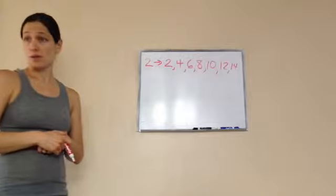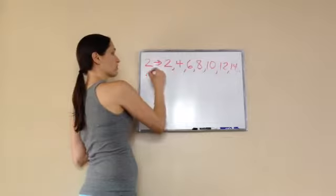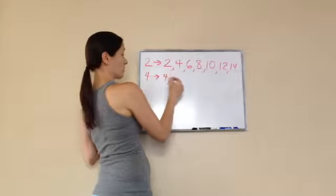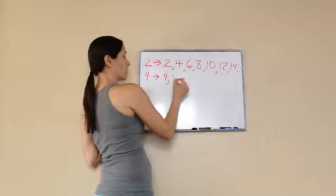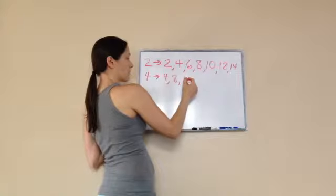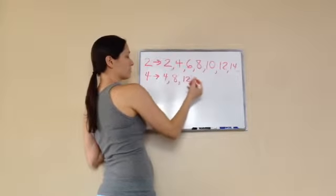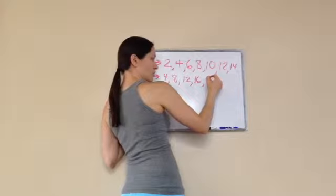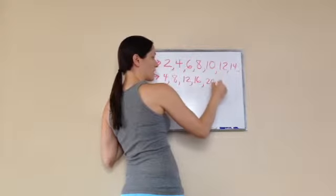If I asked you the multiples of 4, what's 4 times 1? 4. 4 times 2? 8. 4 times 3? 12. 4 times 4? 16. 4 times 5? 20. 4 times 6? 24.